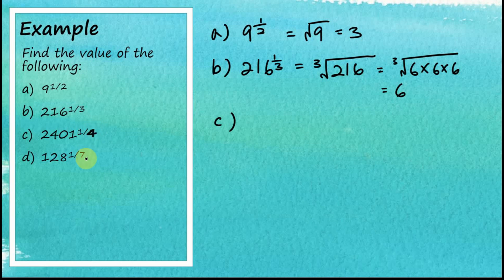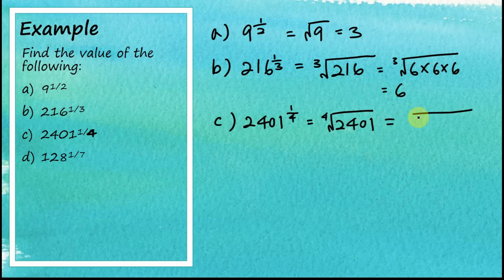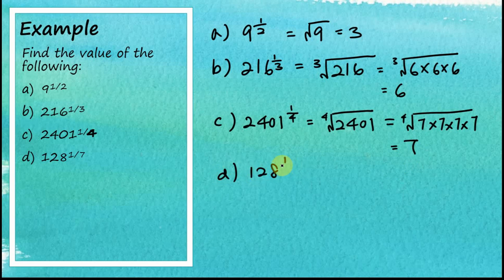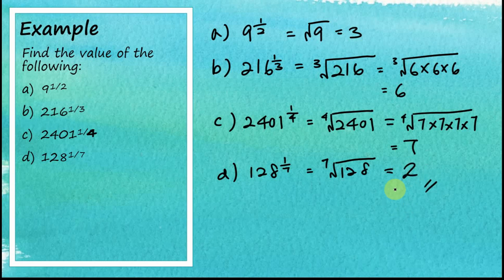For question c — and I think there is a correction here, this is supposed to be 1 over 4 — 2401 to the power of 1 over 4 equals the fourth root of 2401. We find that 2401 equals 7 times 7 times 7 times 7, so this equals 7. For question d: 128 to the power of 1 over 7 equals the seventh root of 128, and by calculation you can find that this equals 2. So this is how to find the value of fractional indexes.